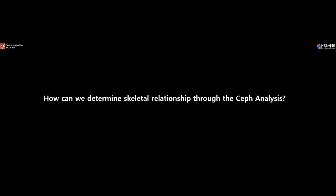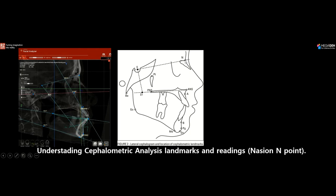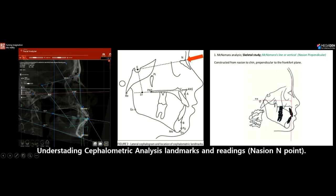To determine the skeletal relationship through cephalometric analysis, we need to understand the landmarks. We start with nasion — the suture combining the frontal bone to the nasal line. From nasion, the nasion perpendicular line, also called the McNamara line, runs perpendicular to the Frankfurt horizontal plane. This line helps us understand the skeletal relationship of our patients.